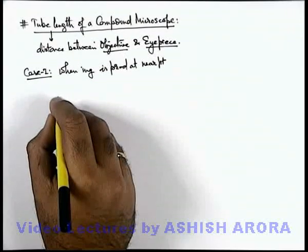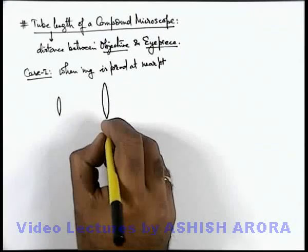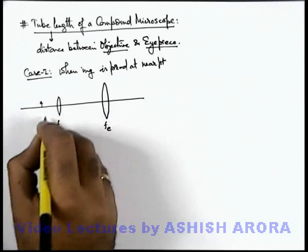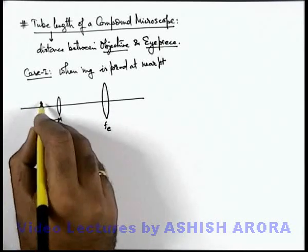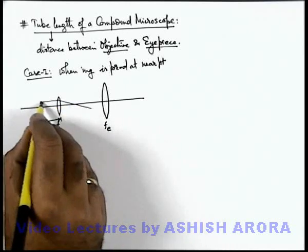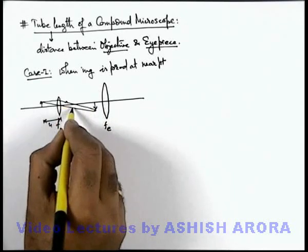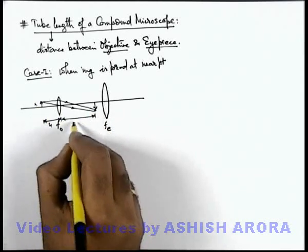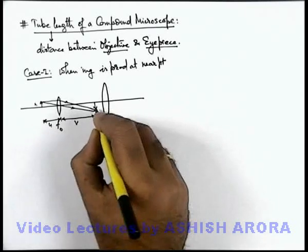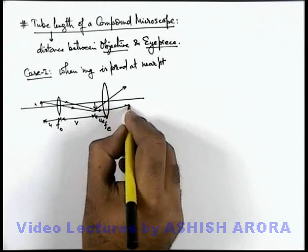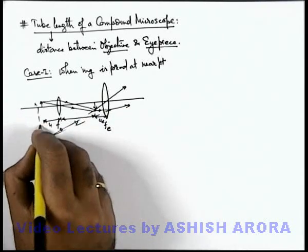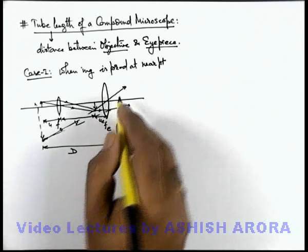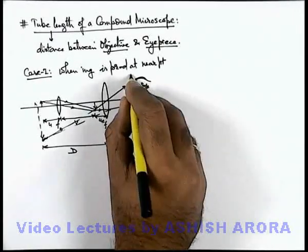In this situation, if we look at the optical setup: this is the eyepiece lens and this is the objective lens. An object is placed at a distance u from the objective lens, and it produces an intermediate image somewhere here, having a size h prime. The image is produced at a distance v, and it is located at a distance u_e such that the final image produced by the eyepiece is obtained somewhere here, located at the near point distance with respect to the observer's eye into which the final light rays are falling.